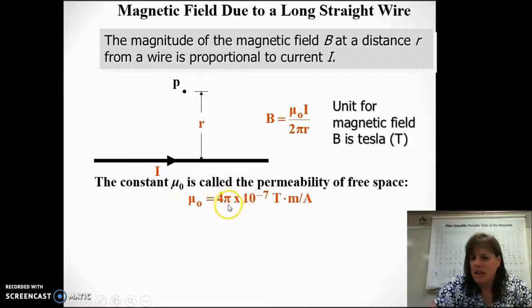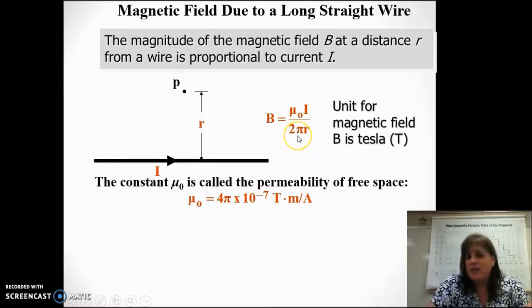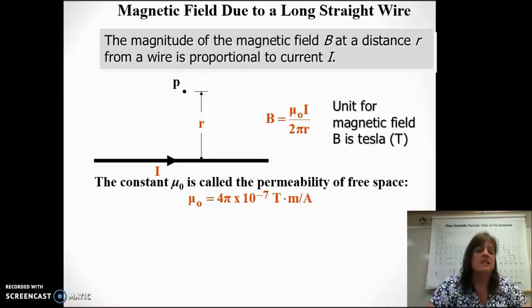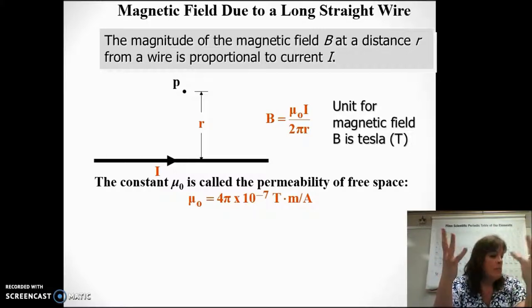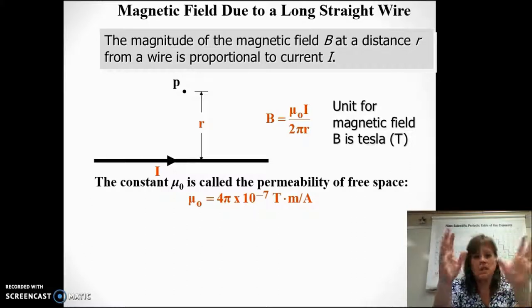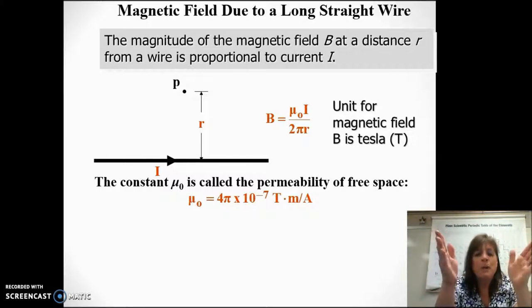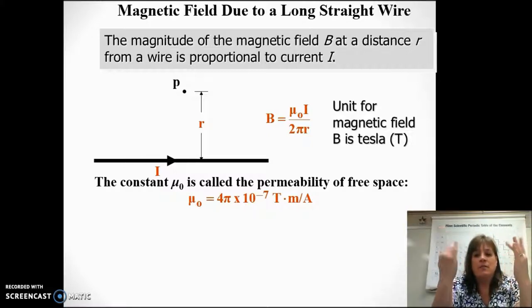Interestingly, you see the constant has 4π and our equation has 2π, which means we can do some canceling, and you get an equation that looks like 2 times 10 to the negative 7 times the current divided by the distance from the wire. You're probably wondering why there's a pi in both. Remember, this is for a long straight wire only. If we had other shapes or a shorter wire, the magnetic field would actually be an integral and the equation would be different — we'd have to do some calculus. But for your purposes, the magnetic field for a long straight wire is 2 times 10 to the negative 7 times the current divided by the distance from it.